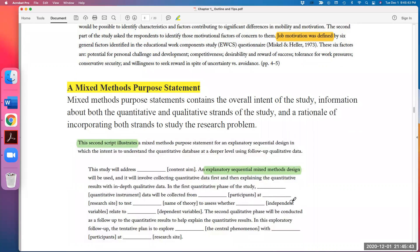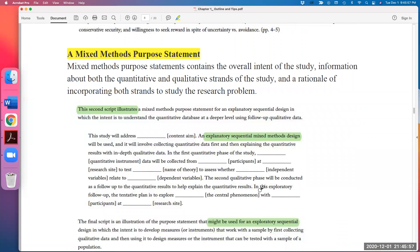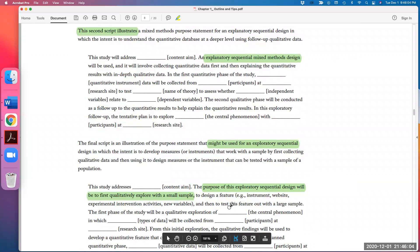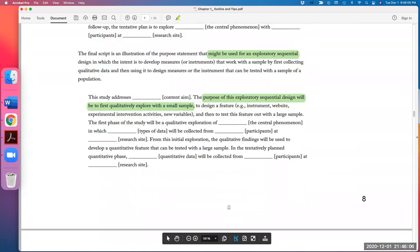Mixed method has more details of which type of mixed method, either explanatory or explanatory sequential or other types. There are at least three major types of mixed methods. So definitely this is a good template. You can use the book. I highly recommend to buy a copy of Cresswell and Cresswell 2020 or any books that offer you a template and just you fill in.